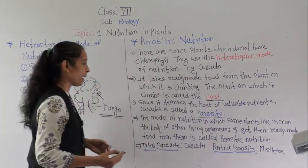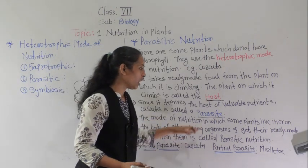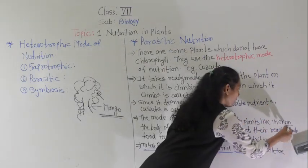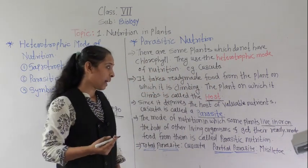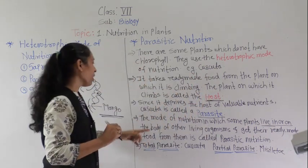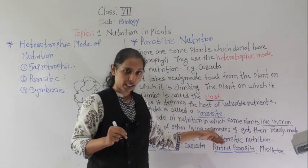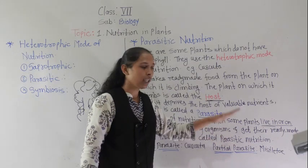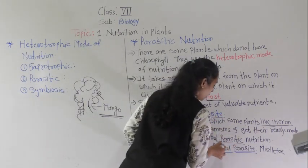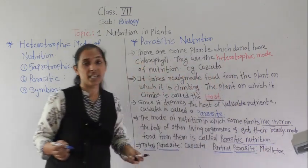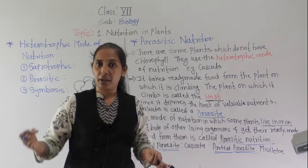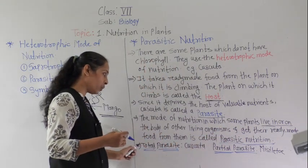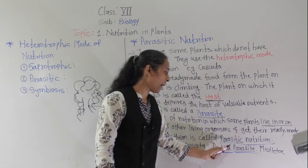Let's see the exact definition of parasite. The mode of nutrition in which some plants live in or on the body of other living organisms and get their ready-made food from them is called parasitic nutrition. So, parasitic nutrition is a mode of nutrition in which organisms live in or on the body of other organisms and from that organism they suck the ready-made nutrients as food.